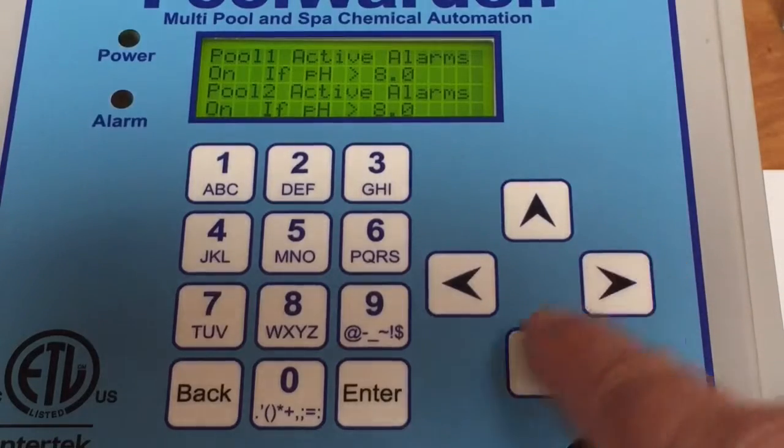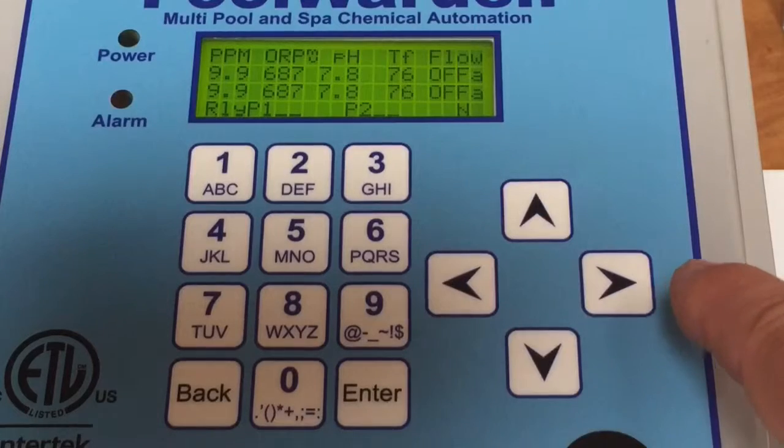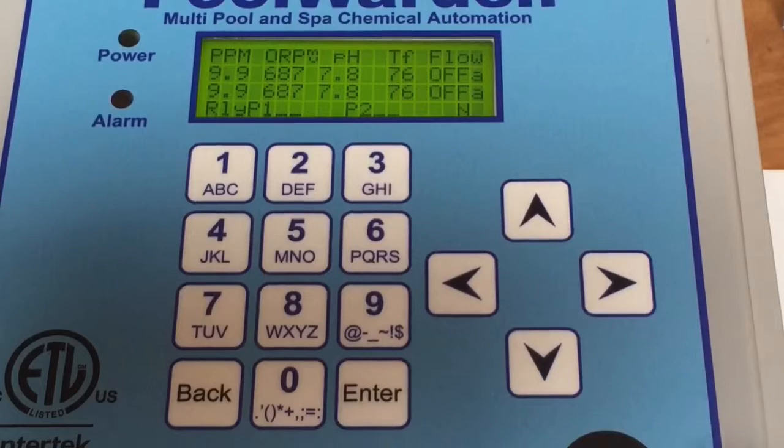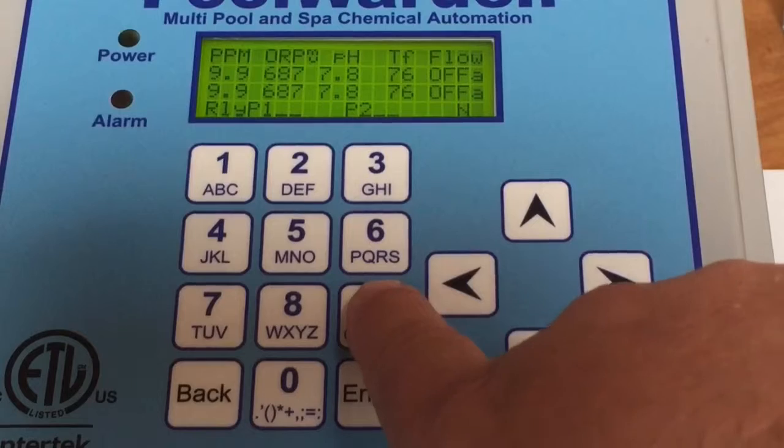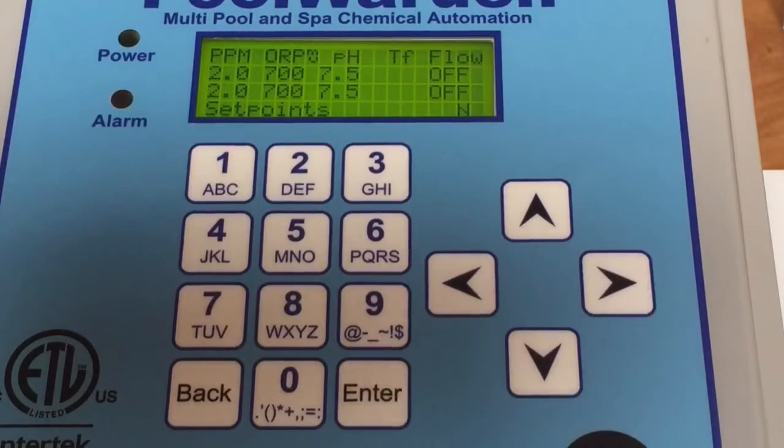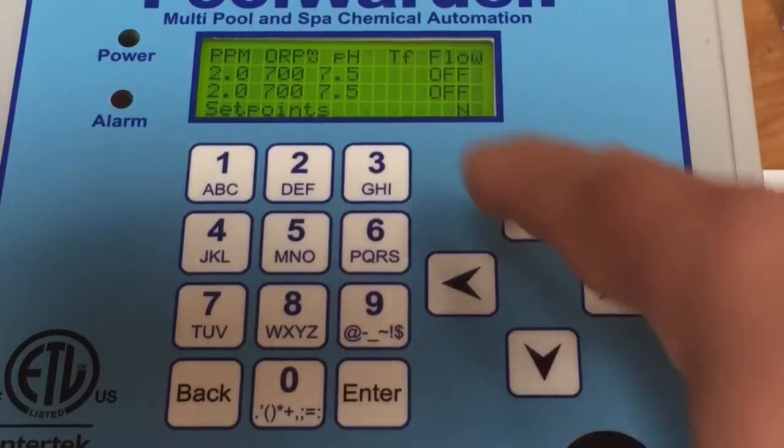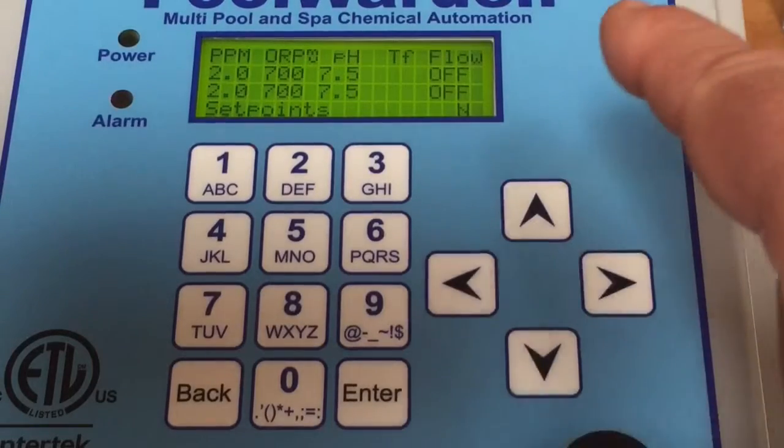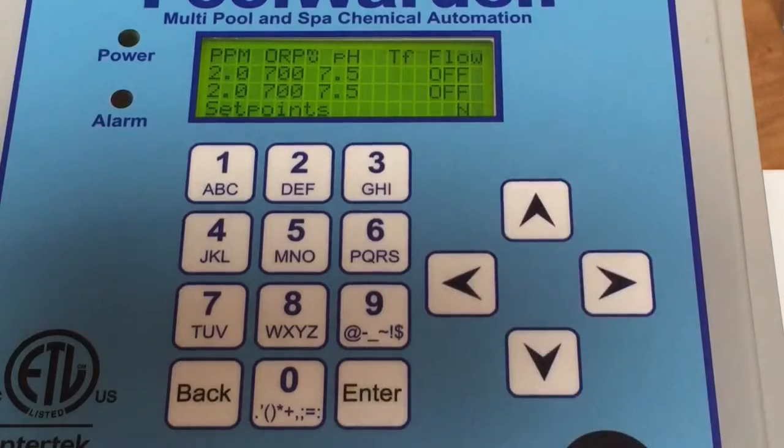Now some of the quick menu features here—if we press the number nine, we'll get our set points. In this case, it'd be 2.0 ppm, ORP 700, pH 7.5. Now remember, if you do not have the True DPD sensor installed on this controller, you will not get the ppm readings.